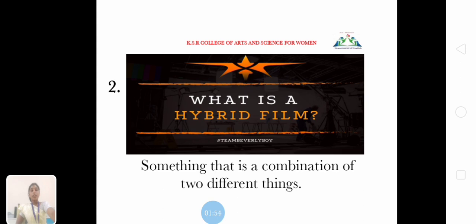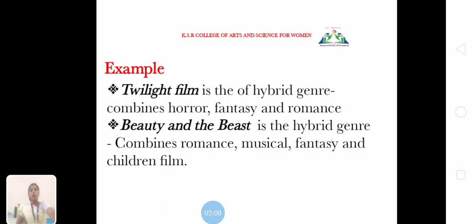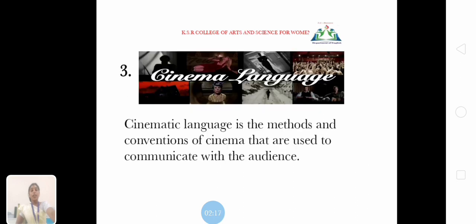What is a hybrid film? Something that is a combination of two different things. We have two examples here. The Twilight film is a hybrid genre that combines horror, fantasy and romance. Beauty and the Beast is a hybrid genre that combines romance, musical, fantasy and children's film.